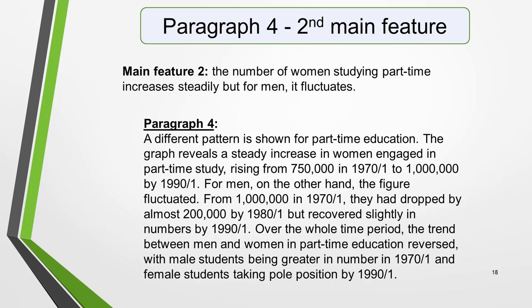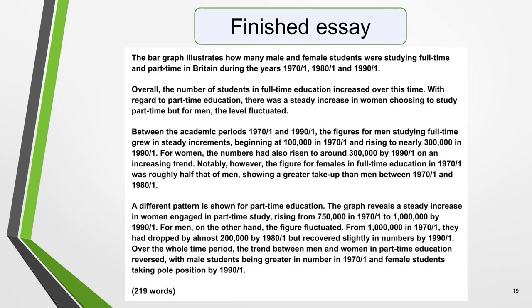Over the whole period, the trend between men and women in part-time education reversed, with male students being greater in number in 1970–71, and female students taking pole position by 1990–91. Here are the four paragraphs brought together to create our finished essay. Pause the video and read through it, so that you can hear how the four elements flow from one to the other. This sample essay is well over the minimum word limit, so you can see that you don't have much space to include very much detail at all. That's why it's essential to select just a couple of main features to write about.